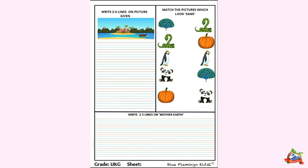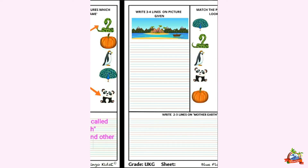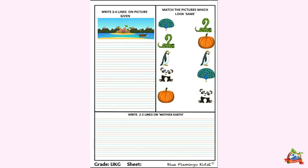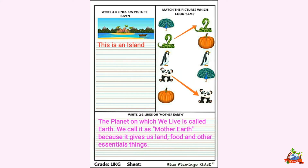So, first of all, what we are getting? We can see an island. This is an island. And there are so many mountains behind the island. And there are so many trees. And there is a boat. So, you can see. You will see this picture carefully and then you will write three to four lines about this picture.